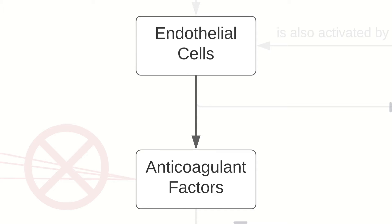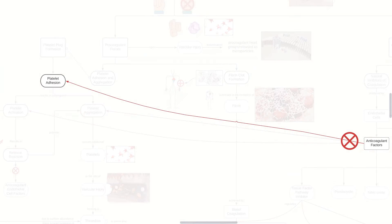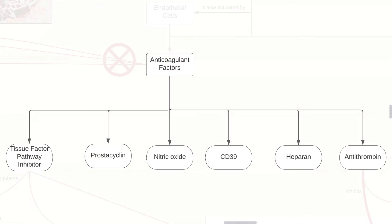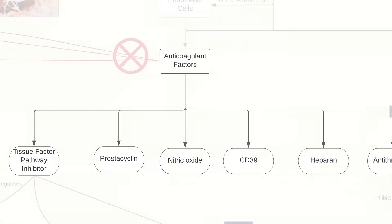Our endothelial cells have anticoagulant factors that inhibit platelet adhesion, platelet aggregation, and platelet activation. And we have so many anticoagulant factors, but we'll concentrate more on the tissue factor pathway inhibitor.